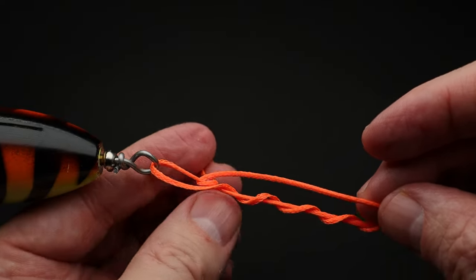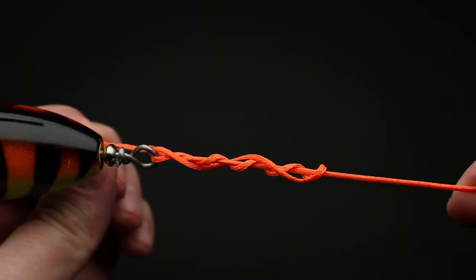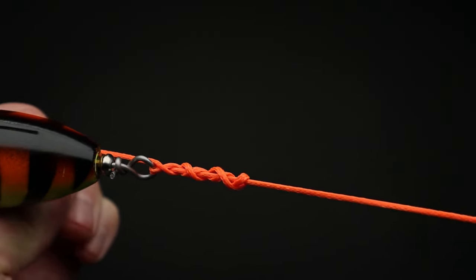Now grab the end of the line with one hand and the main line with the other hand and pull on both lines until the knot forms at the eye of the lure.